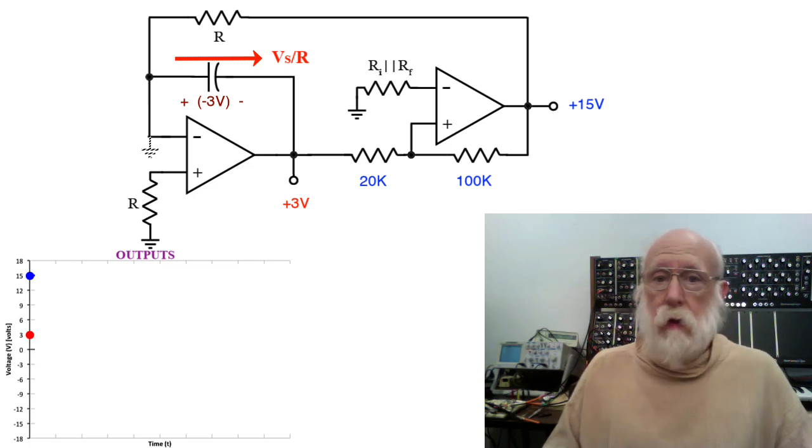Since R is always between V sub S, which is plus 15, and ground, the voltage across R is always 15 volts, therefore I sub R is a constant. So the voltage across C is going to start ramping up from minus 3.